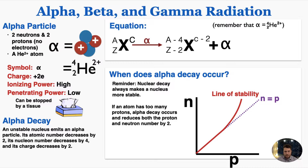Alpha decay is a name for what happens when an unstable nucleus emits an alpha particle. Its atomic number decreases by two, its nucleon number decreases by four, and its charge decreases by two. I've written the nuclear equation for what happens during alpha decay. You can see the proton number decreases by two, the nucleon number decreases by four, and the charge decreases by two, and you're also left with this additional alpha particle. Nuclear decay always makes a nucleus more stable, so if an atom has too many protons, alpha decay occurs and reduces both the proton and neutron number by two. So alpha decay really only happens with larger nuclei.